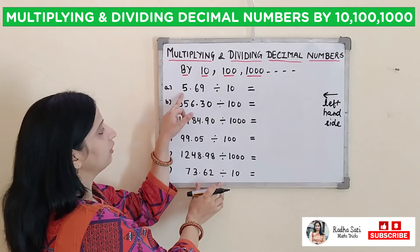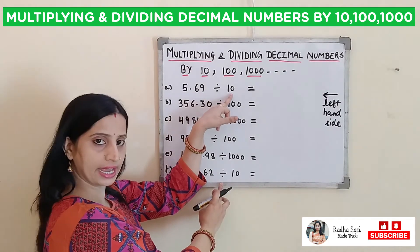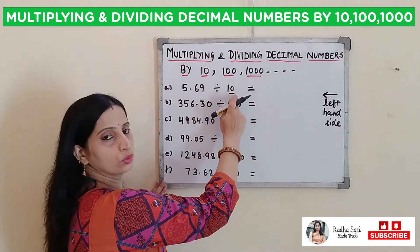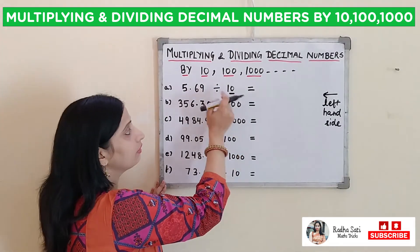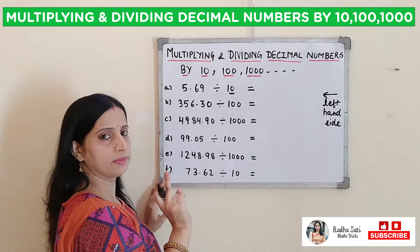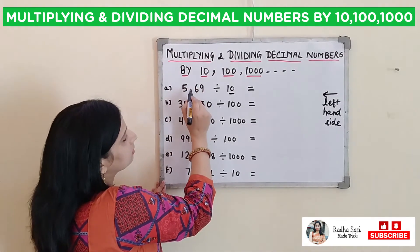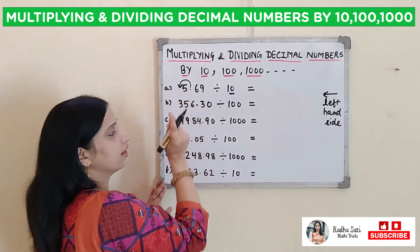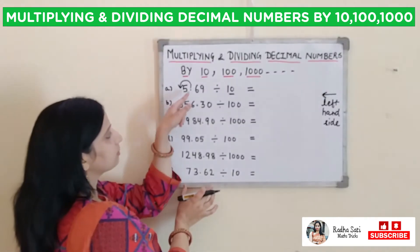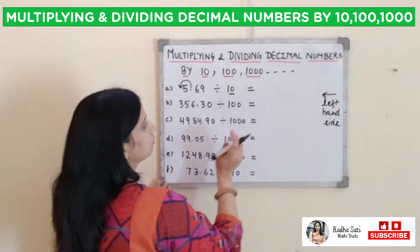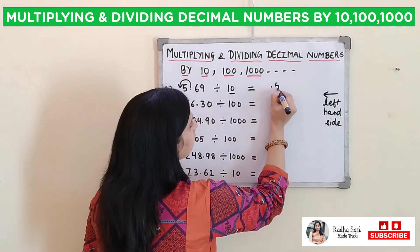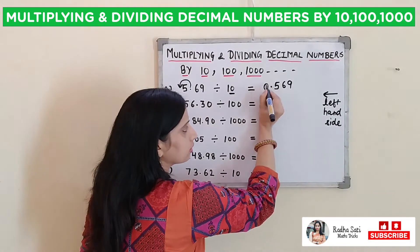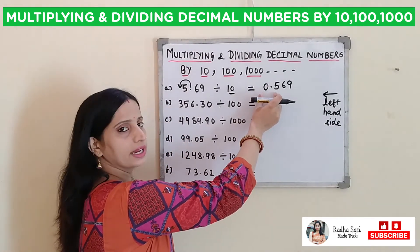First one: 5.69 divided by 10. In 10, how many zeros? There is only 1 zero. This means our decimal will shift to the left hand side by 1 place only. Our decimal is here; it will shift to the left by 1 place, so the decimal will come before 5. This means our answer will be 0.569. Before this point we can put zero — it won't make any difference.